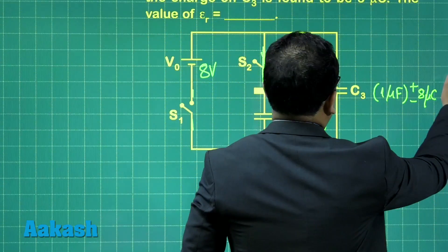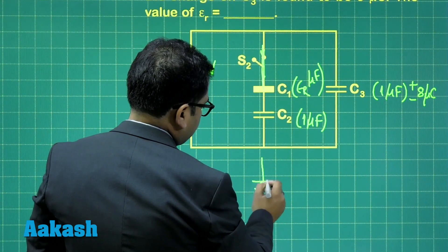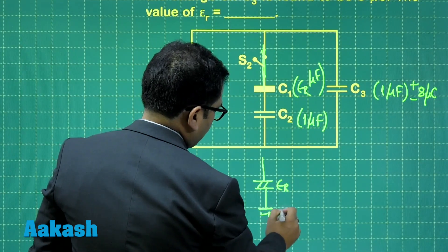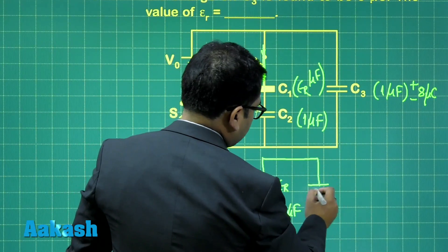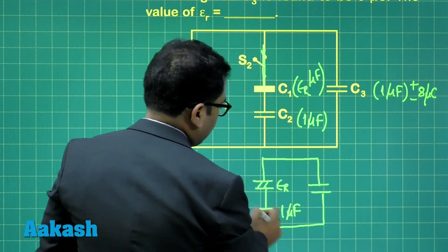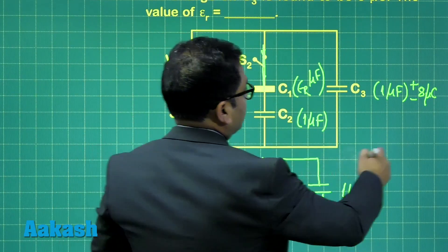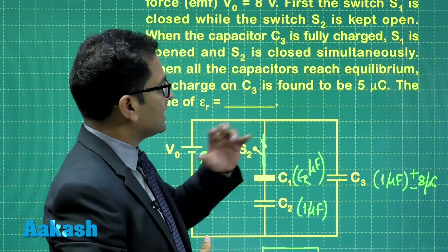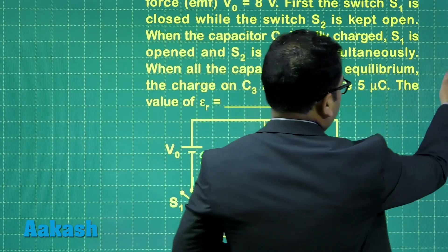Now, the idea is, I'll just draw another circuit here, and this is epsilon R, and this is 1 microfarad. And here, initially, there was 8 microcoulomb, but it says after this connection has been made, the final charge on C3 is found to be 5 microcoulomb.